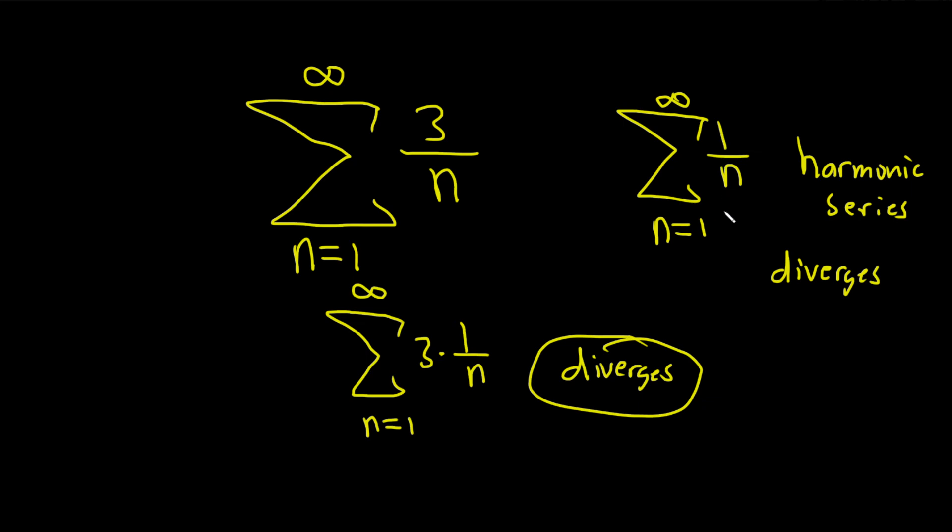So whenever you have the harmonic series and you put a number in front of it, it's not really going to affect the convergence in any way. It's still going to diverge.